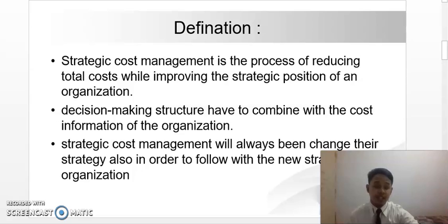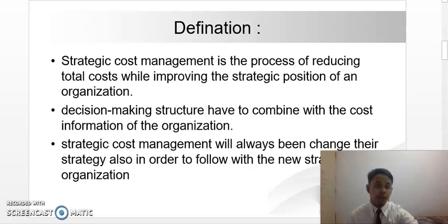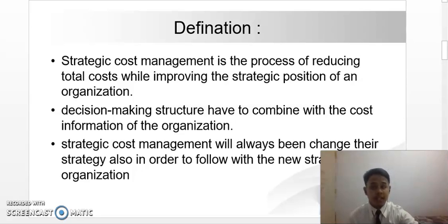What is the definition of strategic cost management? Strategic cost management is the process of reducing total cost while improving the strategic position of an organization, by having a clear understanding regarding which costs can be cut without having a negative effect, and which costs are the main support for an organization. Therefore, management can increase the costs that support the organization in order to strengthen its position.